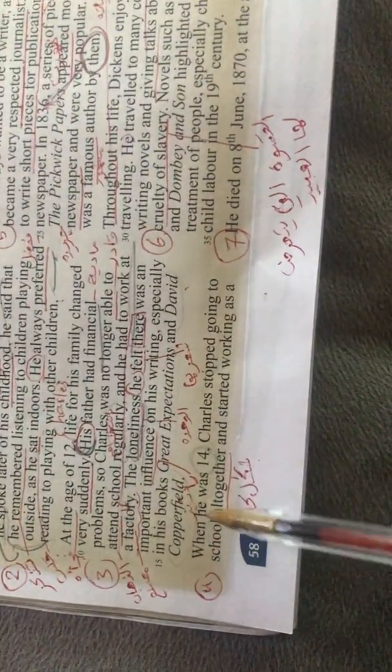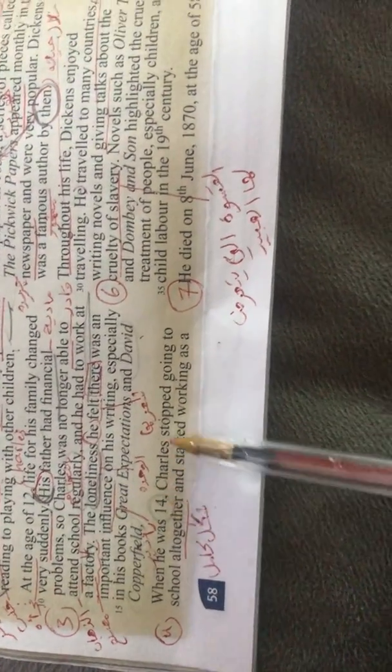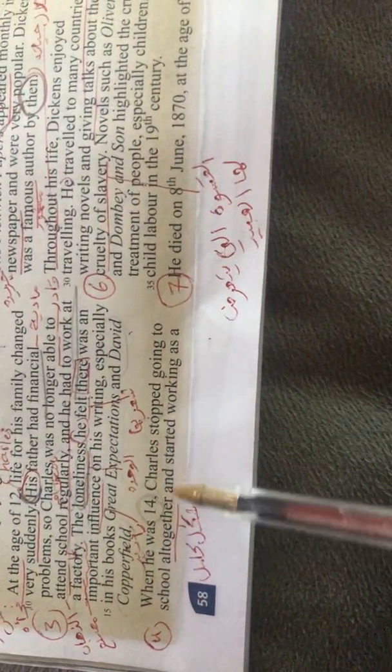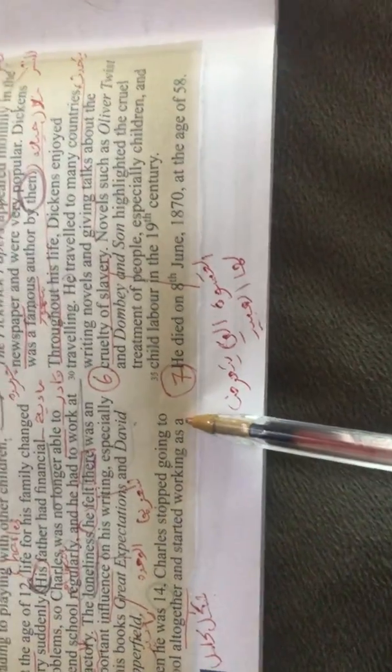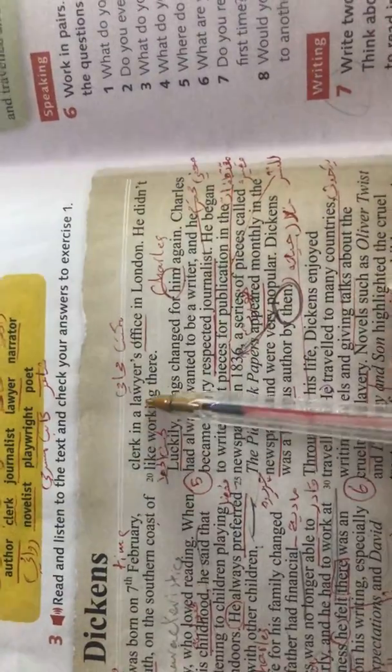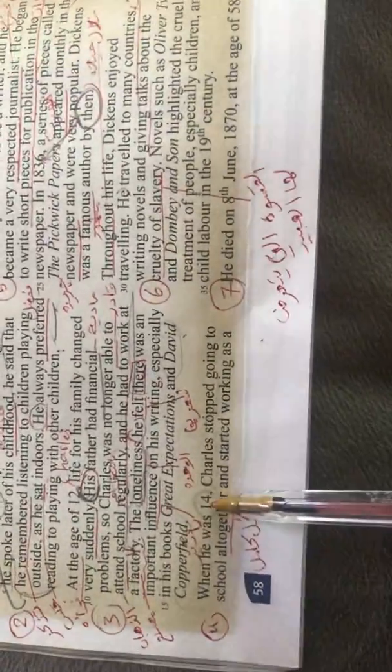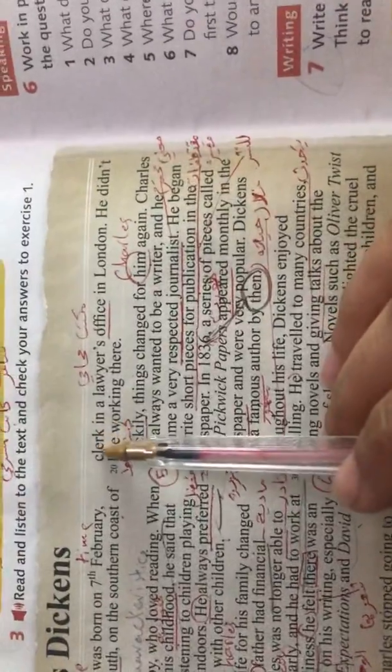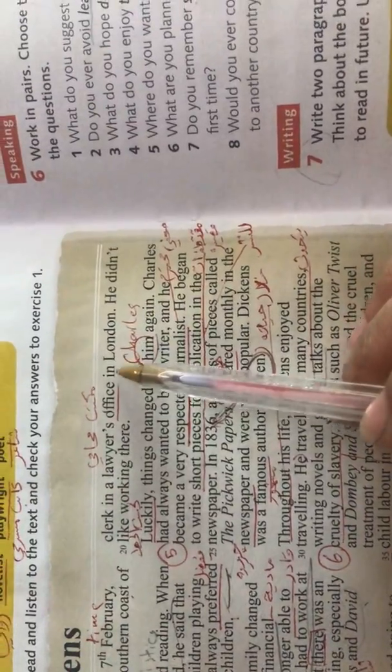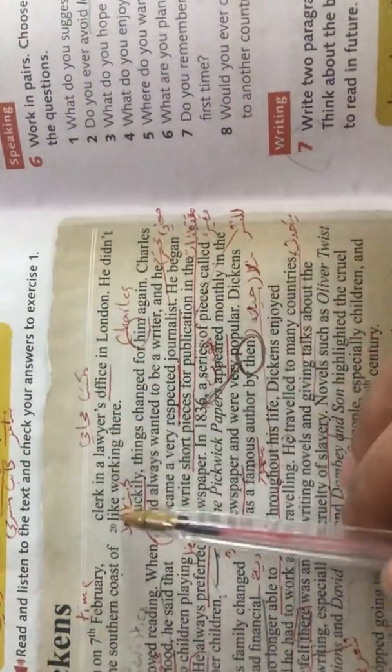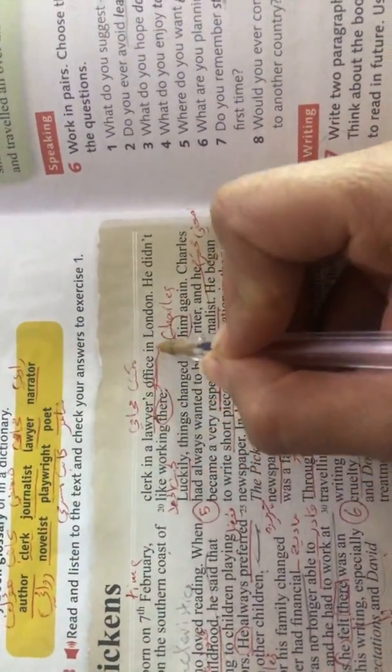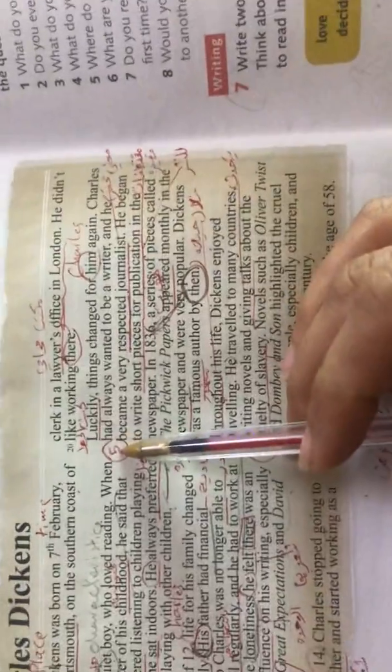Paragraph number four. When he was 14, at the age of 14, Charles stopped going to school altogether. بطل روح المدرسة أبداً. And he started working as a clerk. Clerk قلنا كاتب متل السكرتير. He worked as a clerk in a lawyer's office in London. Did he like the job? He didn't like working there. There refers to lawyer's office in London.